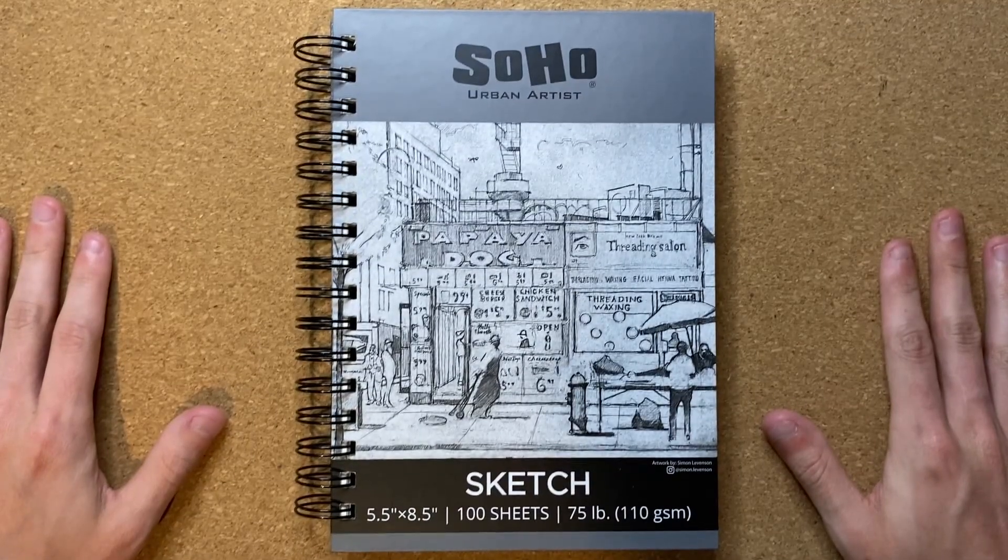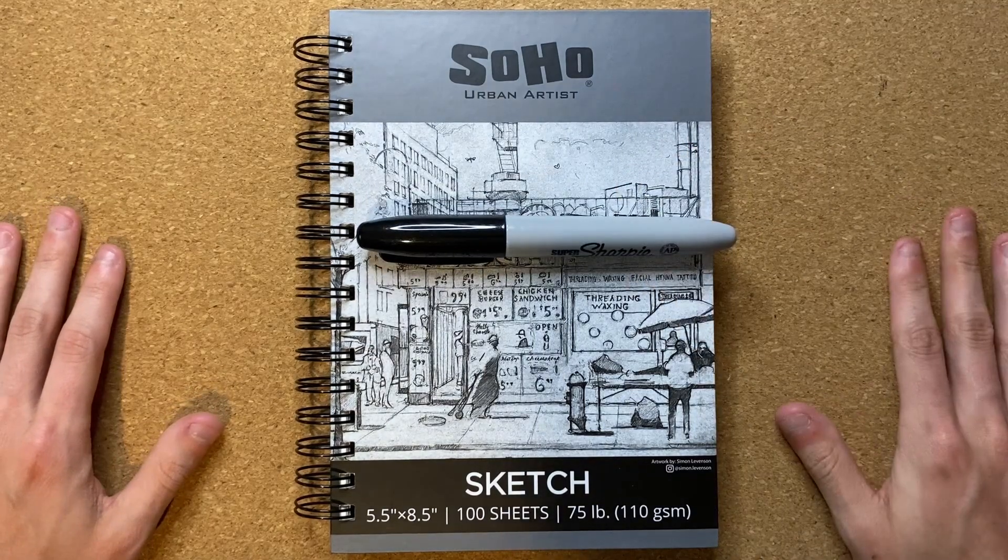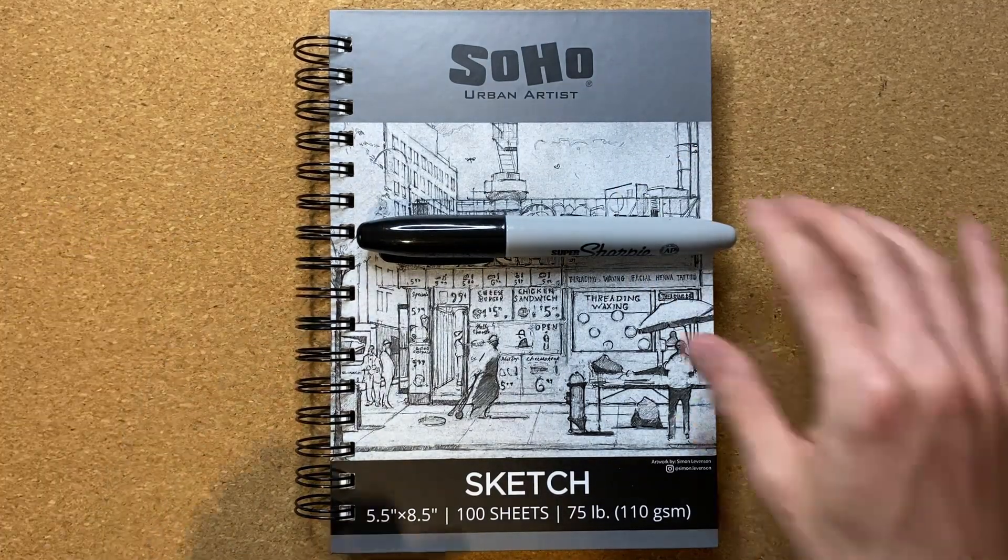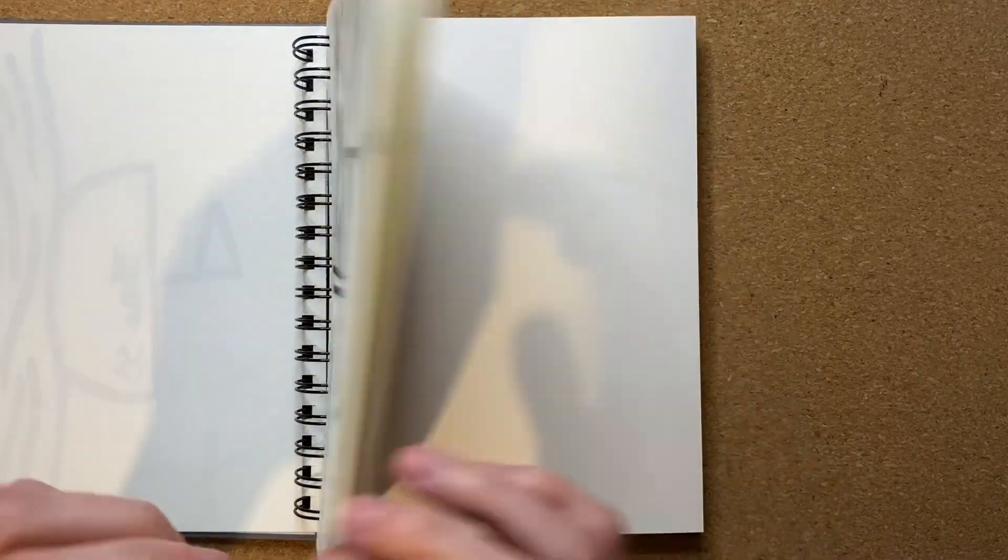Alrighty, so today I'm drawing a circle with eyes with a super sharpie permanent marker. I'm going to be drawing in my Soho Urban Artist Sketchbook, but without further ado, let's go ahead and flip to the nearest open page.